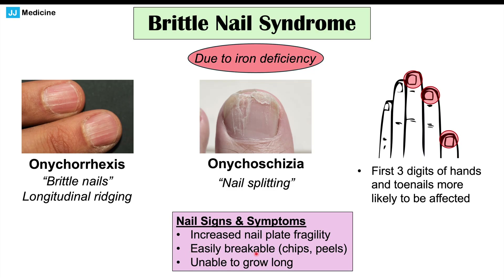Chips and pieces are more likely to come off, and nails are less likely to grow long — you'll find your nails are not growing as long or as fast as they used to. This can all be related to brittle nail syndrome, which is due to iron deficiency anemia, which can occur in celiac disease.